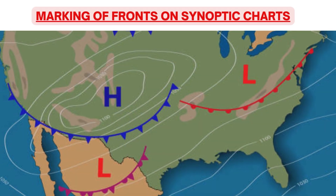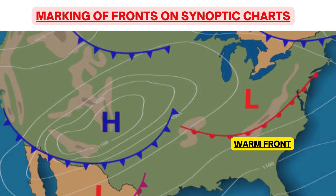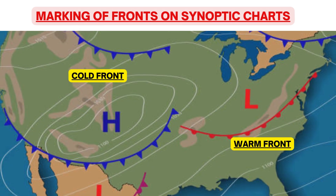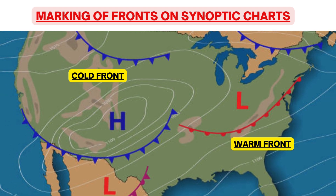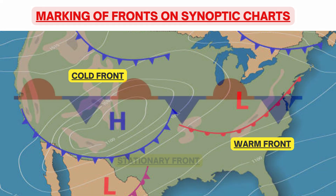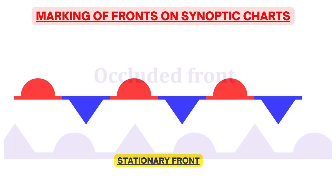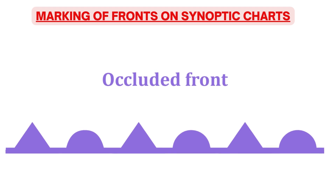Now let us discuss the marking of fronts on synoptic charts. Warm front is denoted by a red semi-circle on synoptic charts, and cold front is denoted by a blue triangle. This semi-circle or triangle also indicates the direction of movement of the front. Stationary fronts are depicted by marking alternate warm and cold front symbols along a straight or curved line. An occluded front is denoted in purple color with alternate semi-circle and triangle.